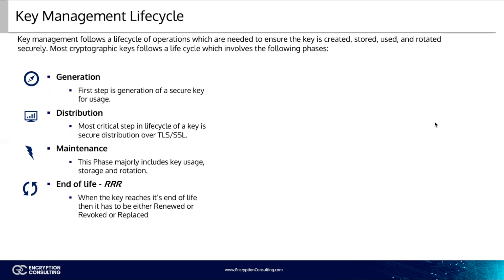The key should only be used by authorized users to make certain the key is not misused, copied, etc. When the key of an encrypted set of data expires, the key is retired and replaced with a new key. Rotation is necessary because the longer a key is in rotation, the more chance there is for someone to steal it or find out about the key. Rotation of keys can happen before the crypto period expires in cases where the key is suspected to be compromised. Two other ways of dealing with a compromised key are revoking or destroying the key in question.